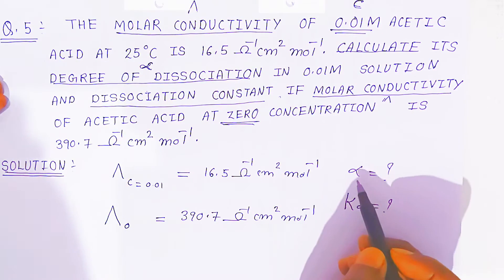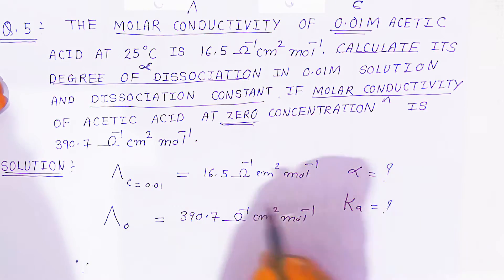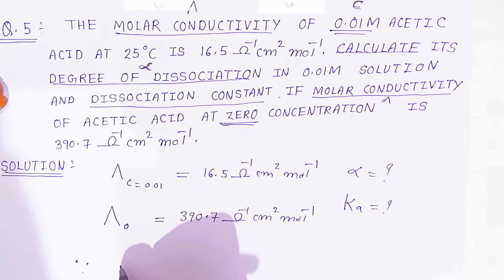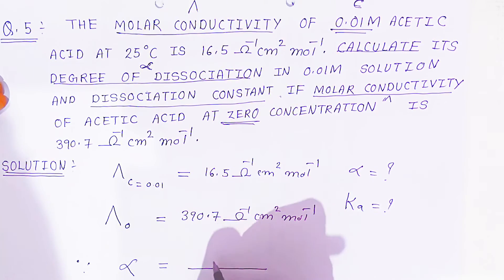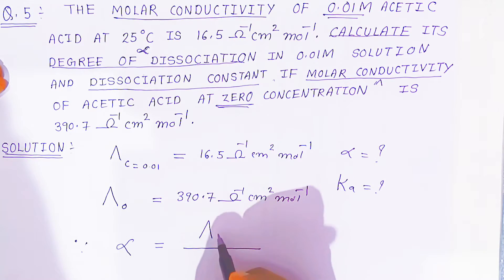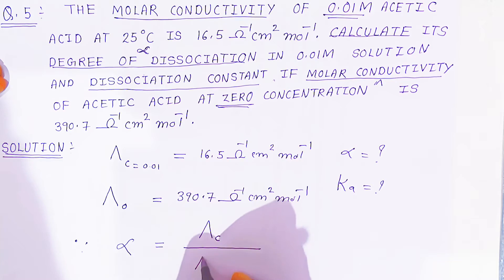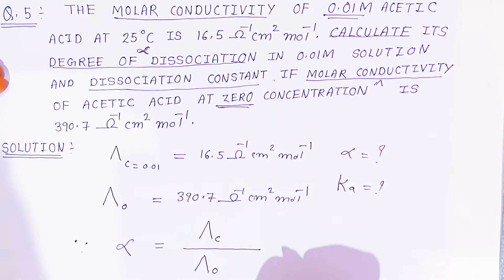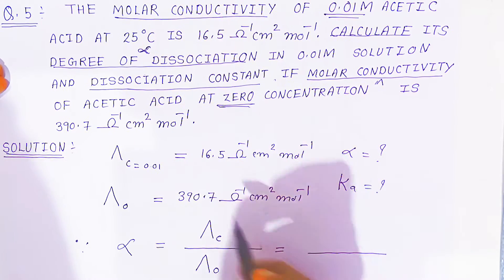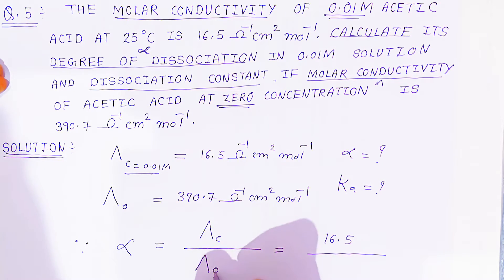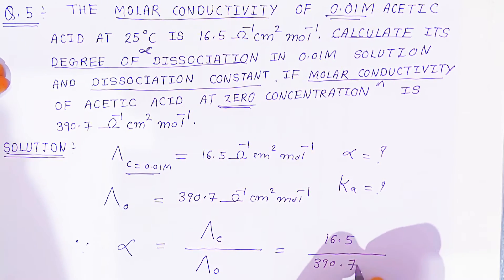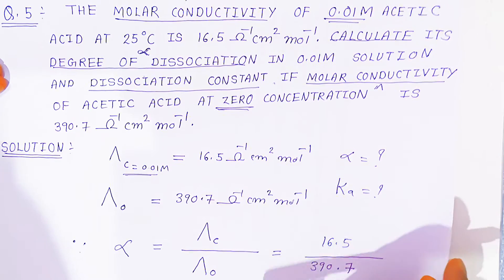Now we know the relation. Since we know the relation between these three quantities: alpha, that is degree of dissociation, is nothing but the ratio of the molar conductivity at concentration 0.01 and molar conductivity at zero concentration. You have to just put the values. Molar conductivity at this concentration is given as 16.5, and molar conductivity at zero concentration is given as 390.7. So alpha, the degree of dissociation, is nothing but 16.6 upon 390.7.